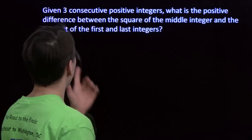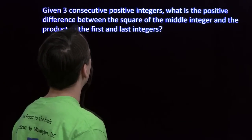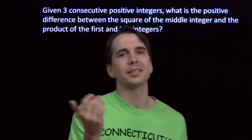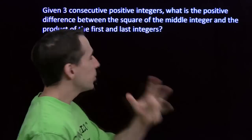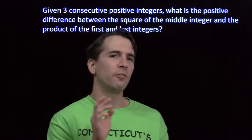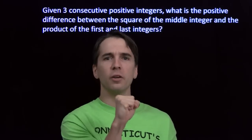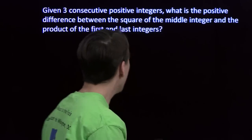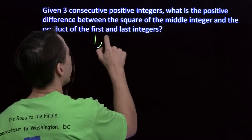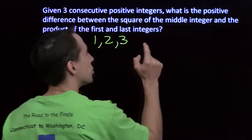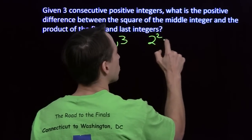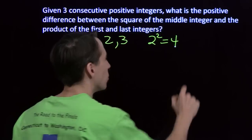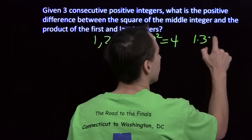All right, let's get to the math. There's our first problem — a word problem. Three consecutive positive integers. We want to find the positive difference between the square of the middle integer and the product of the first and the last. We can get a handle on it with a few examples. Start with 1, 2, and 3. Square of the middle: 2 squared is 4. Product of the first and last: 1 times 3 is 3.